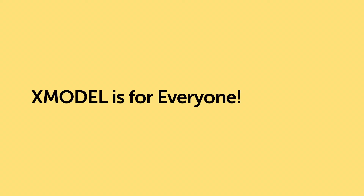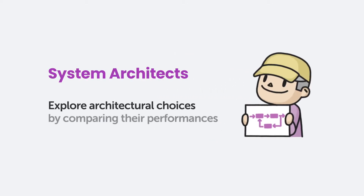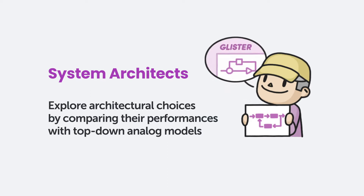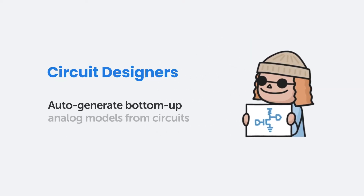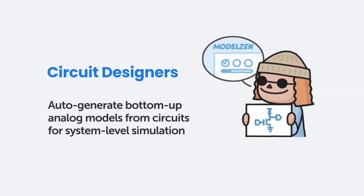XModel is for everyone. If you're a System Architect, you can use Glister to build top-down analog models in schematic forms and explore different architectural choices. If you're a circuit designer, you can use Model XAN to automatically extract bottom-up analog models from your circuits with a mouse click.